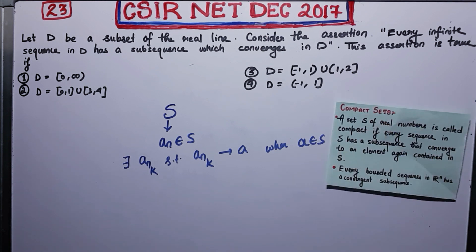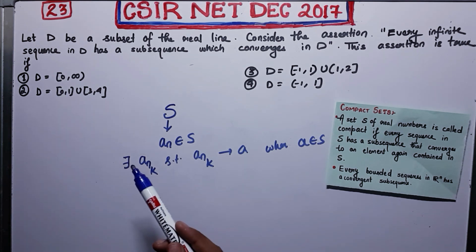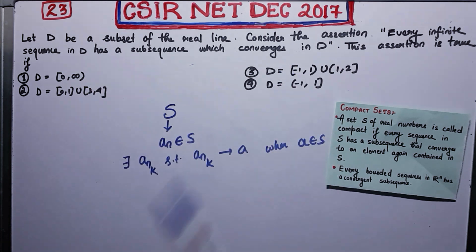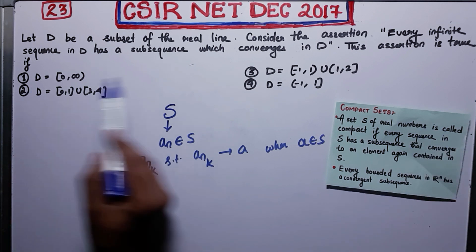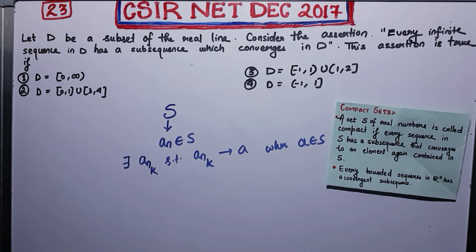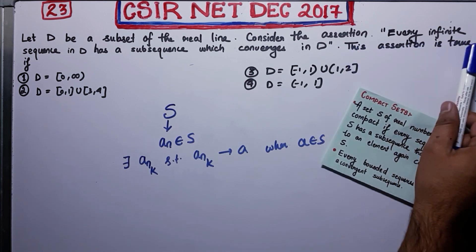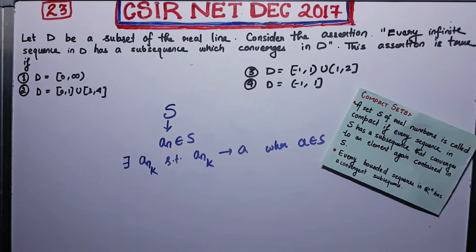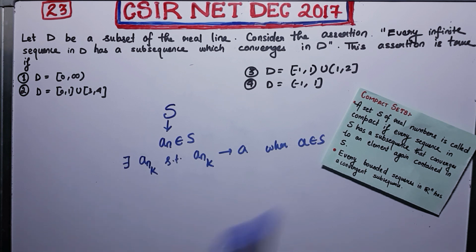Now look at the assertion again: every infinite sequence in D has a subsequence which converges in D. Don't you see that this definition is exactly like that? So what the question is asking is: among which of these sets, which one is compact? You need to check whether each option is compact. The assertion is nothing else — it is the definition of a compact set. So to check which D satisfies the assertion, you need to check which D is compact.